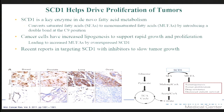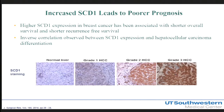Several reports have shown that inhibiting SCD-1 with small molecule inhibitors slows tumor growth both in vivo and in vitro. Another interesting aspect of SCD-1 is that its expression is correlated with prognosis — the higher the expression, the poorer the prognosis. This was specifically shown in breast cancer patients. In hepatocellular carcinoma, SCD-1 has also been shown to be inversely proportional with differentiation.